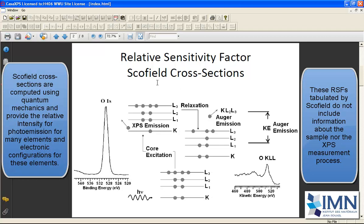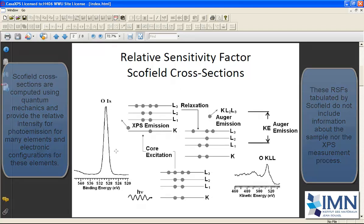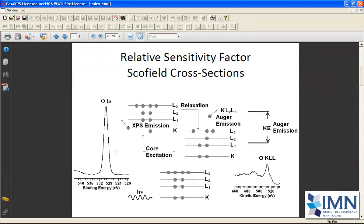So what we do is we compensate the measured intensity using Scofield cross-sections that have been calculated as photoionization cross-sections for a given photon energy, a given element, and a given electronic state.